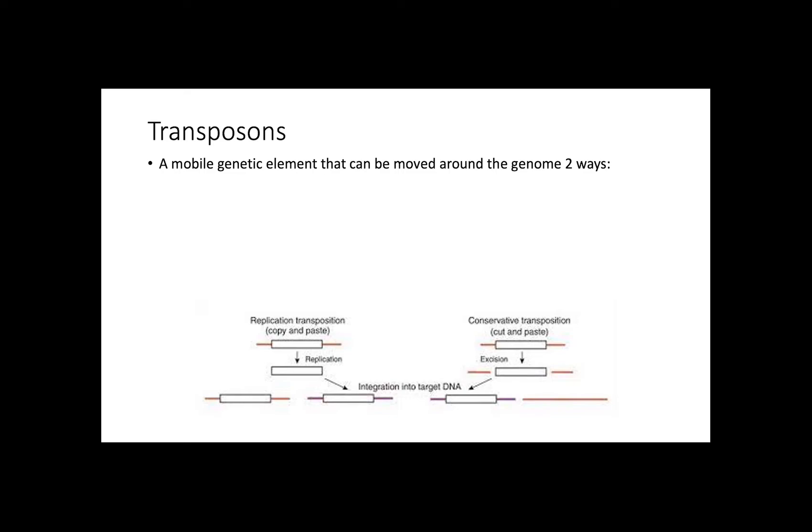Transposons are a mobile genetic element that can be moved around the genome two ways. We have replicative transposition, which is also known as the copy and paste method, where the original segment of DNA is duplicated and the duplication is then inserted into the genome. With this method, the original segment of DNA remains where it was.